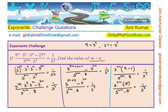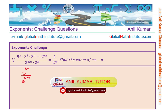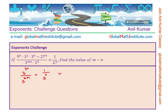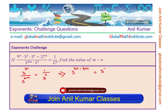Let's rewrite this on a fresh page. We have 3 to the power of 3n over 3 to the power of 3m equals 1 over 3 cubed. Combining the powers, this gives us 3 to the power of 3n minus 3m. On the right-hand side, we can write this as 3 to the power of minus 3.